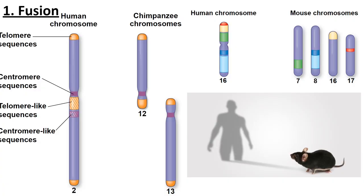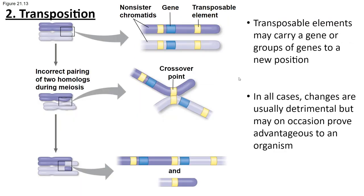Chromosomes can also undergo fusion events, where one chromosome is created from two. This is thought to have happened with chimpanzees and humans. Chimpanzees have chromosomes 12 and 13, but when we compare them to human chromosome 2, we find incredibly similar sections of genomic information — as if those two were spliced together in a fusion event. This would explain why chimpanzees have more chromosomes than humans while containing much of the same genetic information.